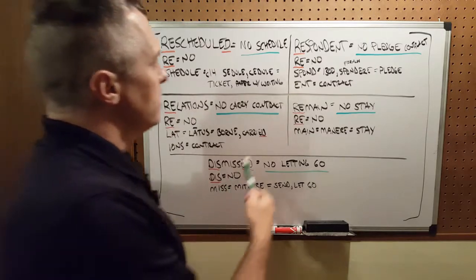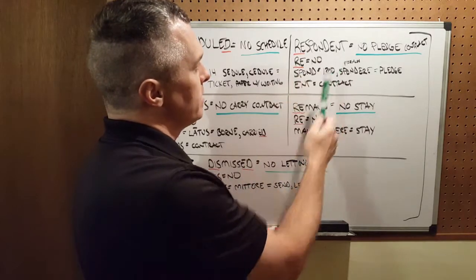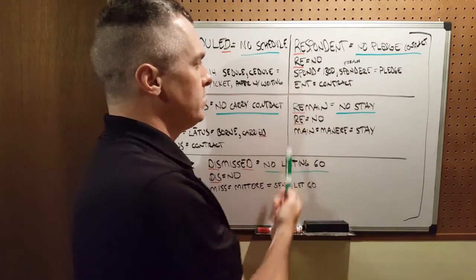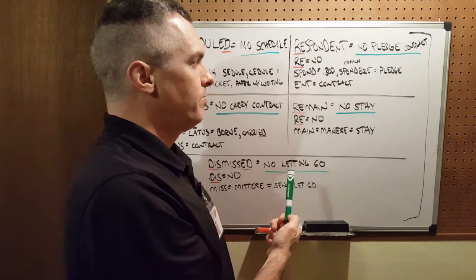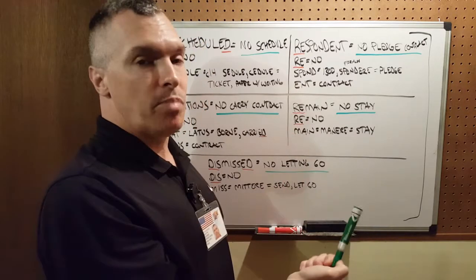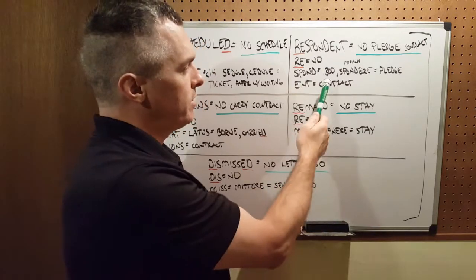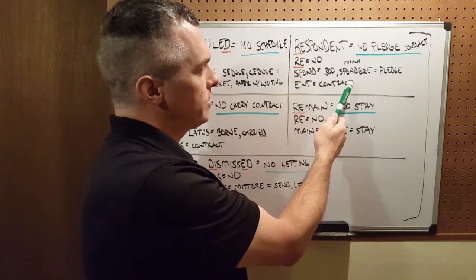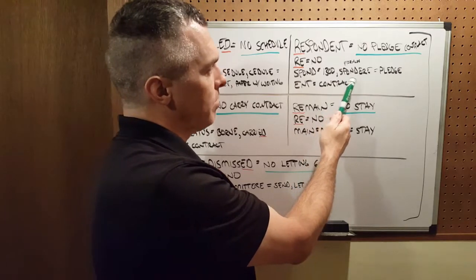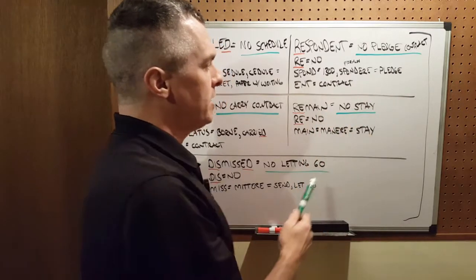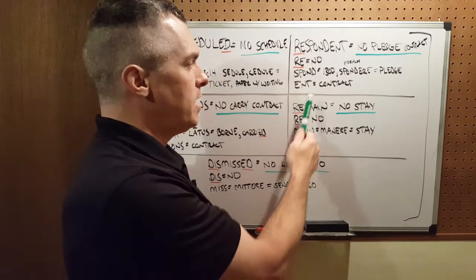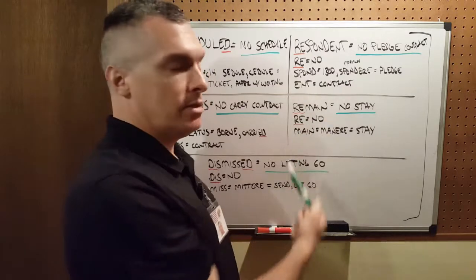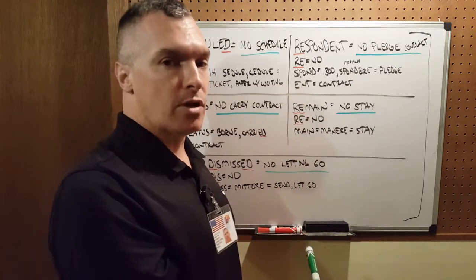The next word is 'respondent.' RE means no. Spond comes from the 1300s — it's a French word from 'spondaire,' it means pledge. ENT is a word-forming element which means contract.